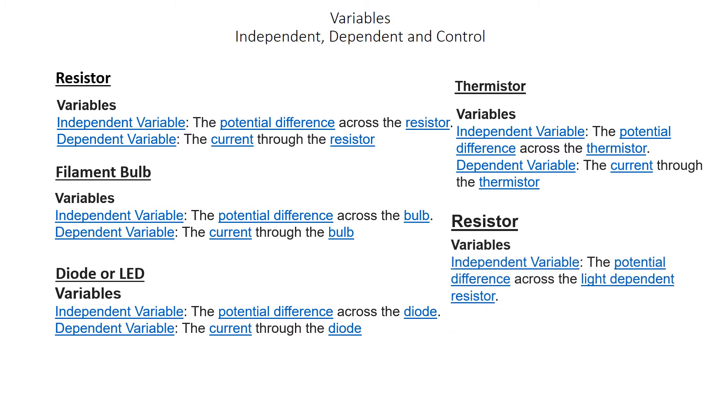Just in case you weren't paying attention, that should say light dependent resistor, but I haven't got time to go back and change it now. So this is a light dependent resistor - the independent variable is the potential difference across the LDR, whereas the dependent variable is the current through there. There are five different components that we need to be able to explain, and we also need to be able to reproduce or sketch out those graphs that accompany our results.